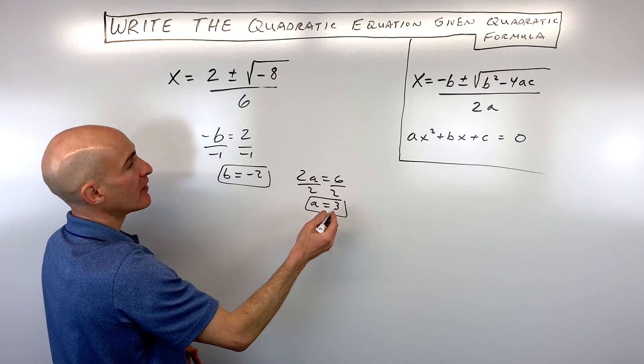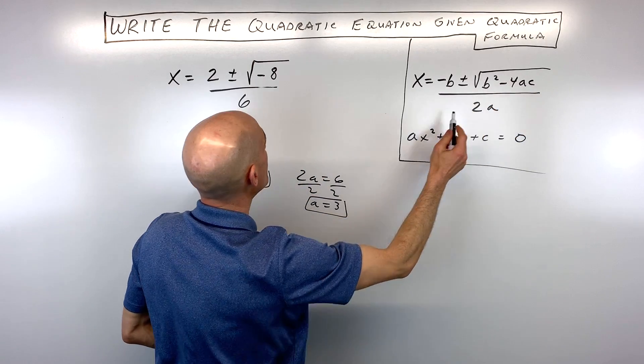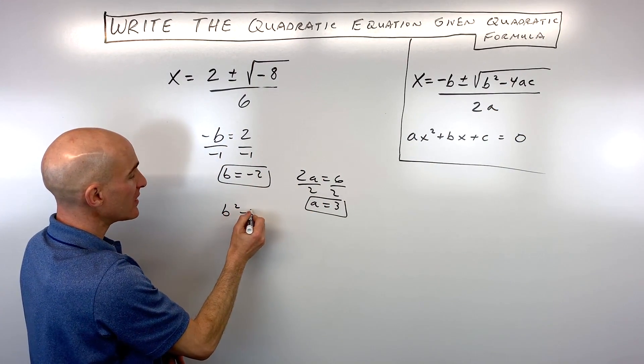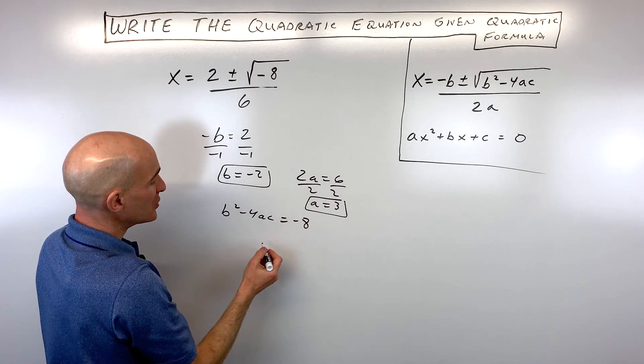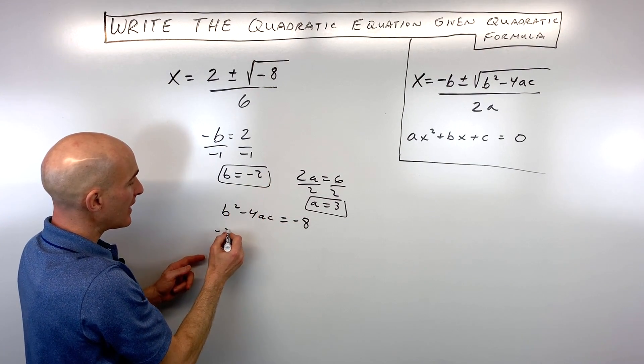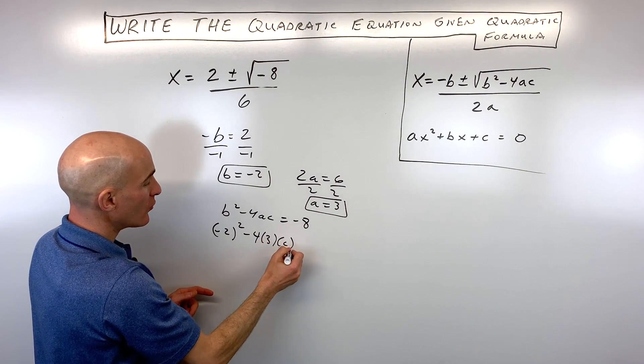And then the last thing that we're trying to solve for here is the c value. Notice what's underneath the square root here: b squared minus 4ac, that's equal to negative 8. So what we can do is substitute negative 2 in for b, a equals 3, c we don't know, and that's equal to negative 8.